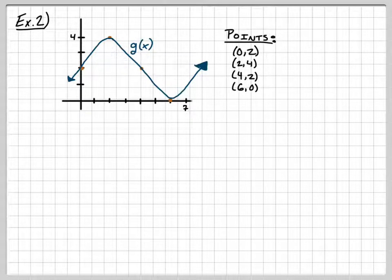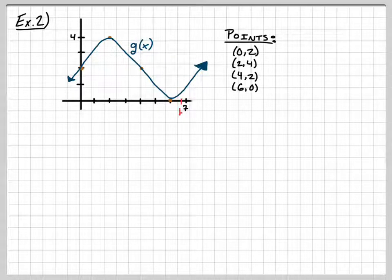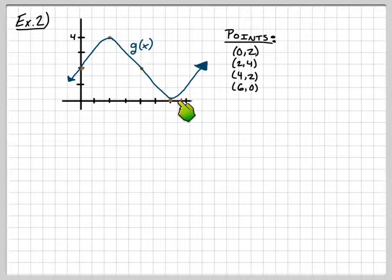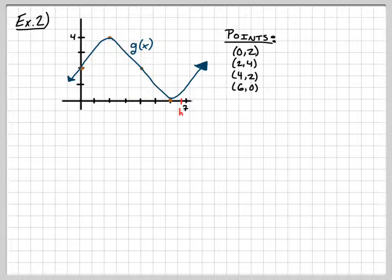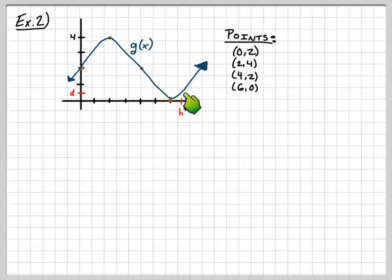I'm giving you the graph of g of x with those points to help make the graph. I also want you to add a tick mark between 6 and 7 on the x-axis — label that h. And then on the y-axis, add a corresponding tick mark and label it d. We'll come back to those. So here's h on the x-axis and d on the y-axis.